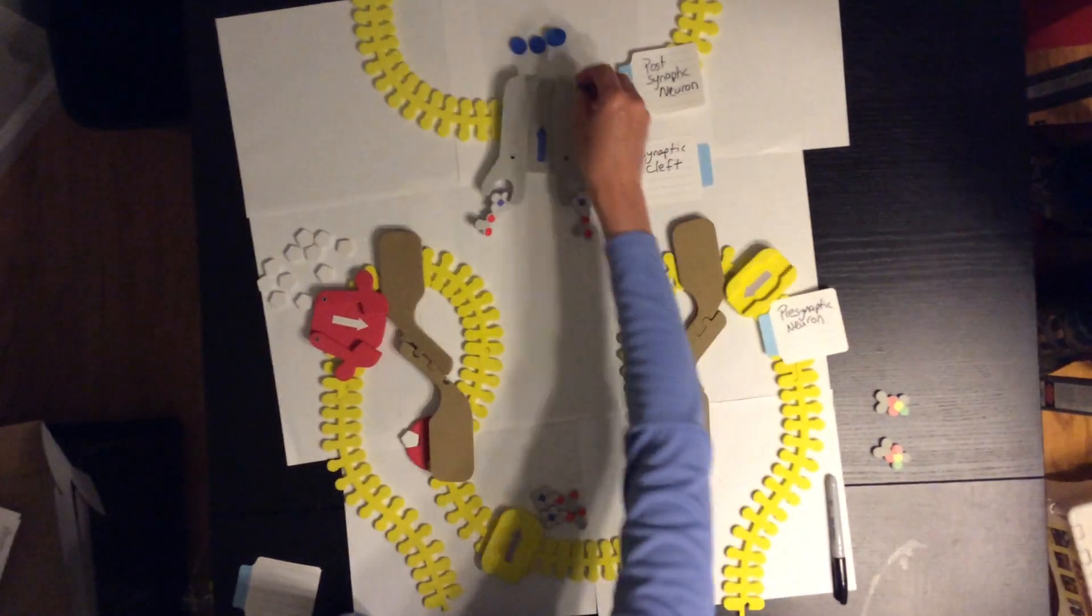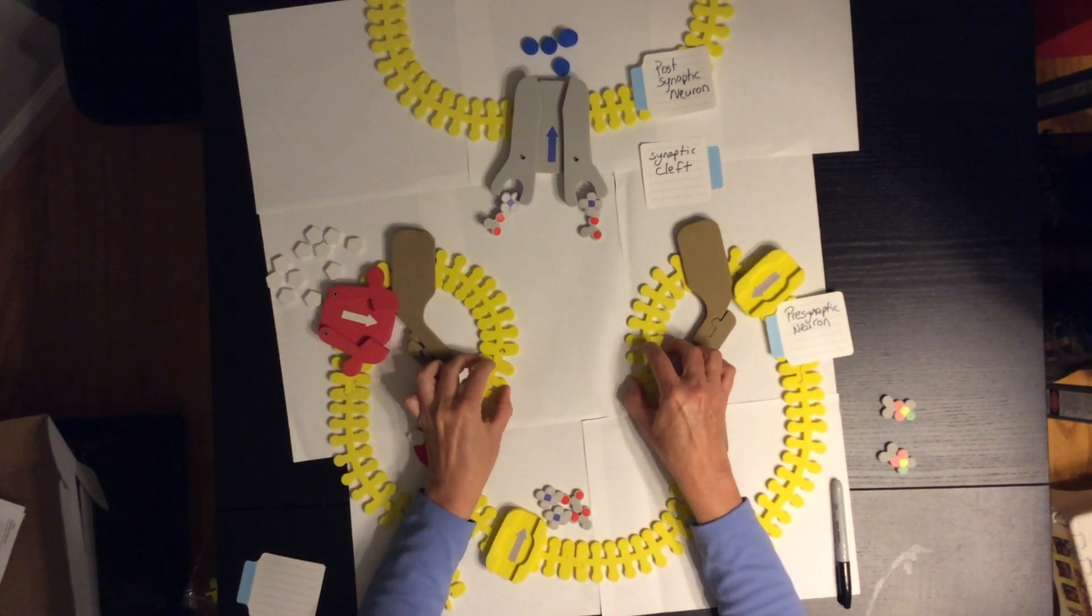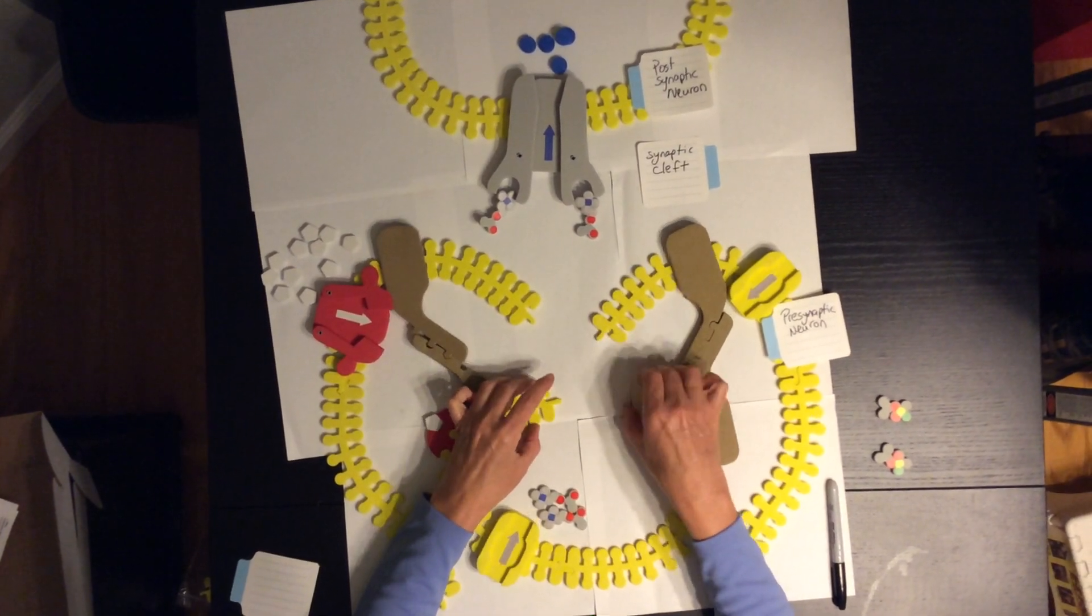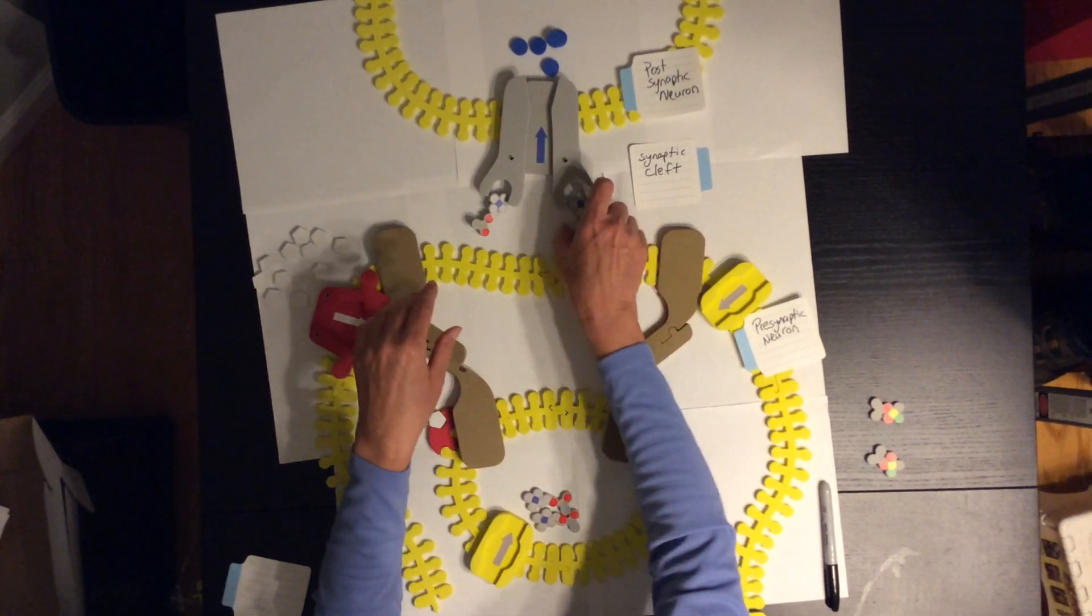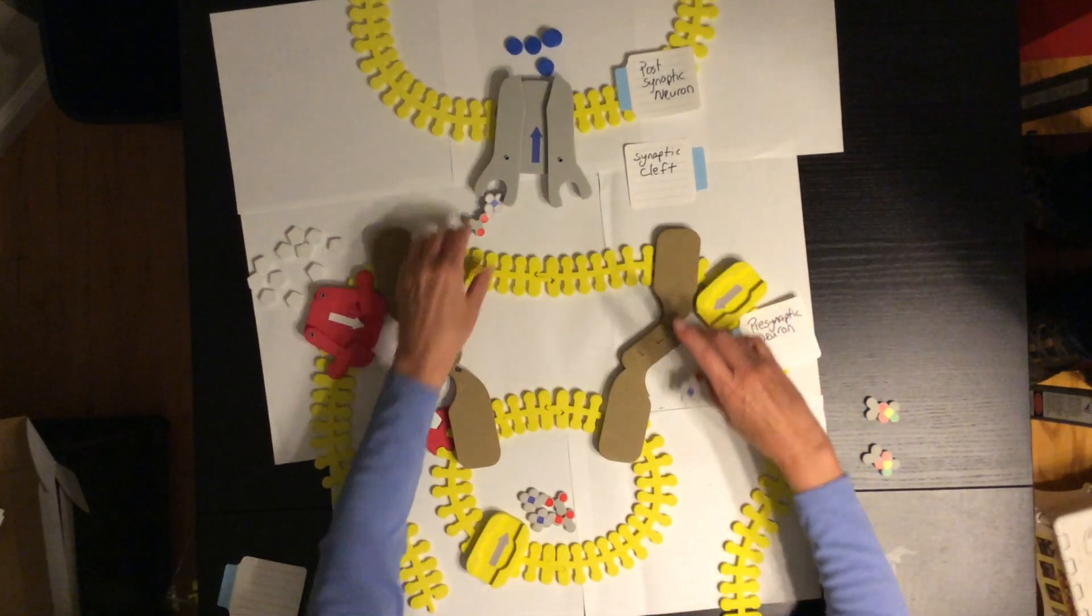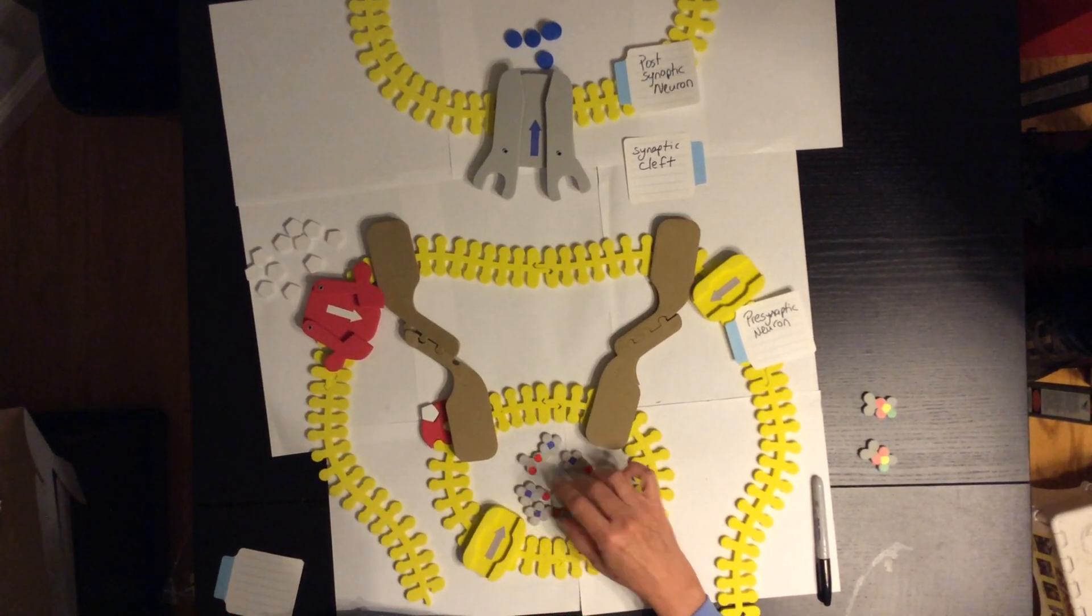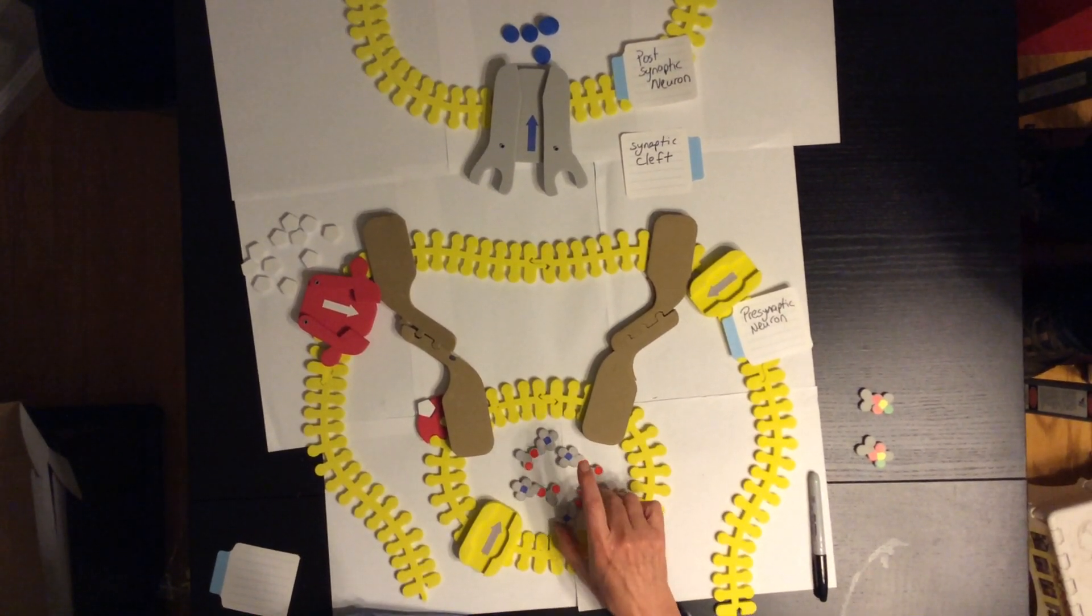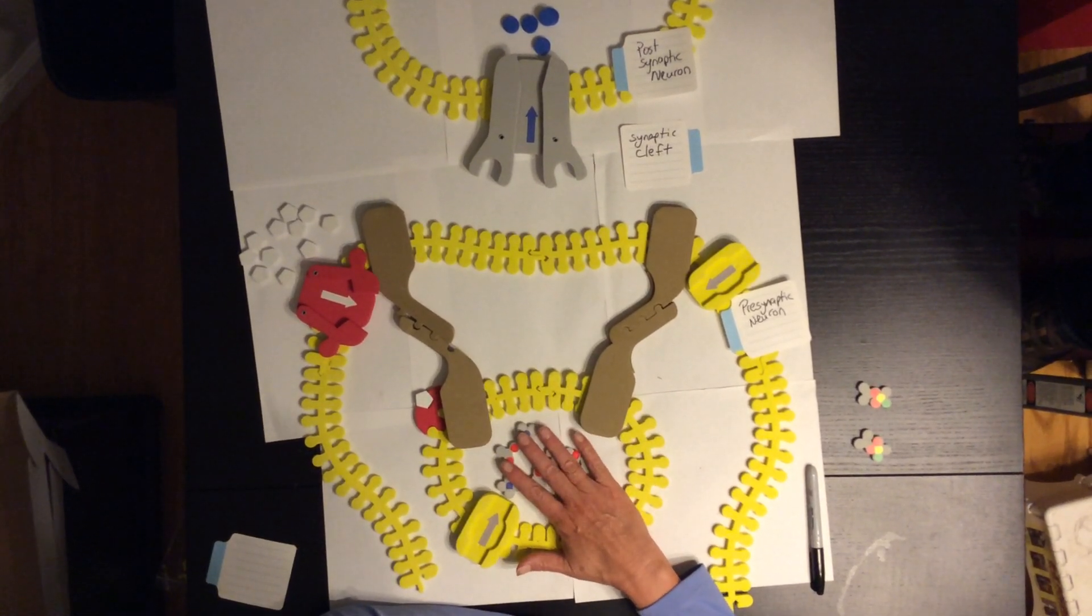For serotonin, serotonin is then reuptaken through this transport channel back into the synapse. If you have a lower concentration of serotonin, sometimes people get depressed when they don't have enough serotonin in their presynaptic neurons.